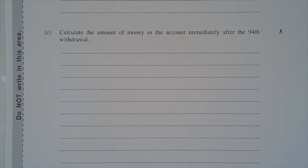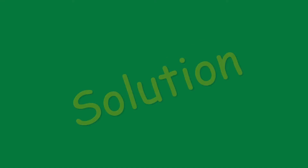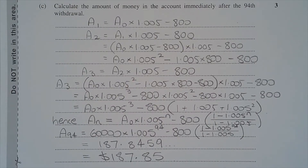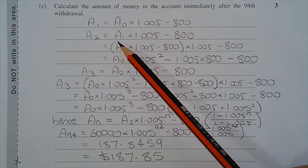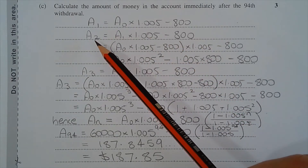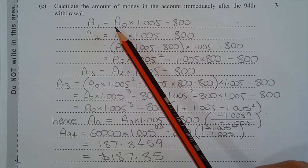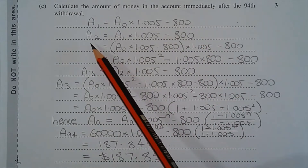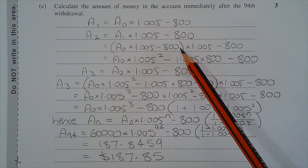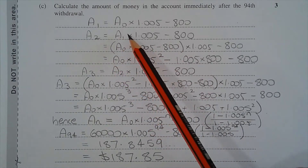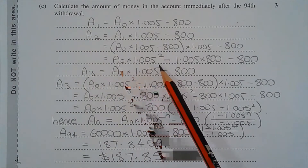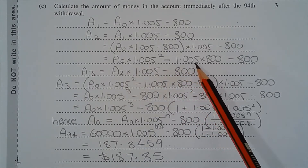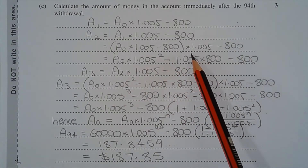Part C. Calculate the amount of money in the account immediately after the 94th withdrawal. The solution involves the sum to N terms of a geometric progression. Using the recurrence relation, A1 equals A0 multiplied by 1.005 minus 800. Now A2 equals A1 multiplied by 1.005 minus 800. Expressing A2 in terms of A0 by replacing A1 with A0 multiplied by 1.005 minus 800, we get A2 equals A0 multiplied by 1.005 squared minus 1.005 multiplied by 800 minus 800. The geometric progression is forming here.